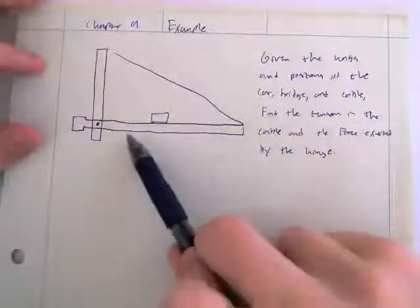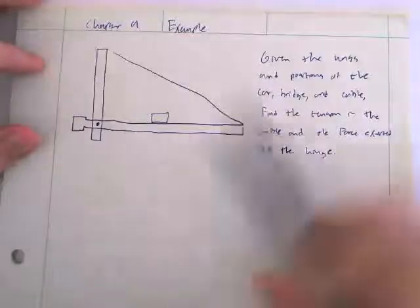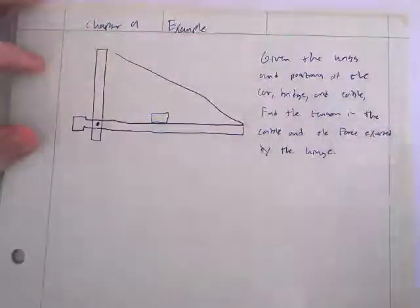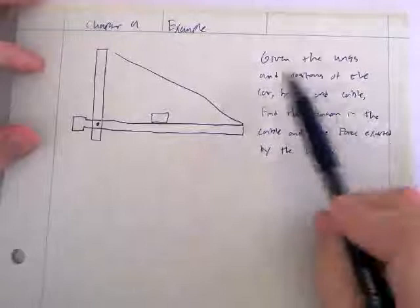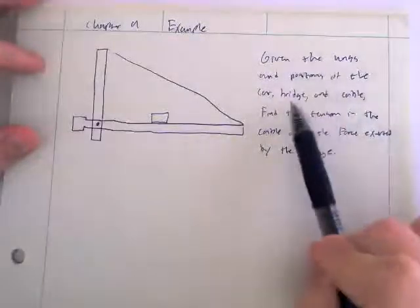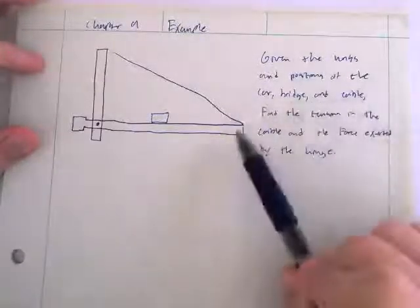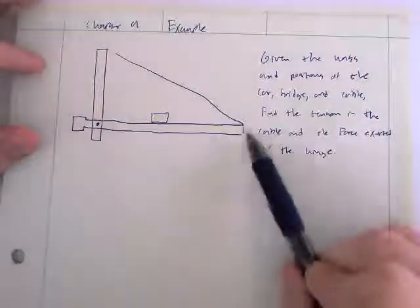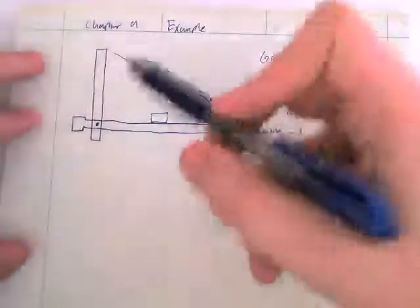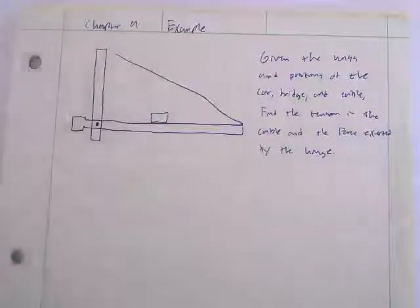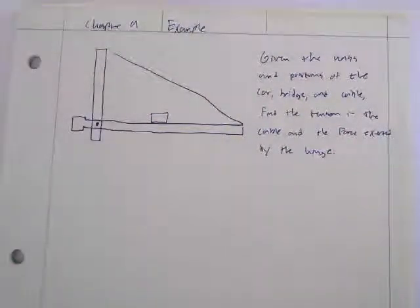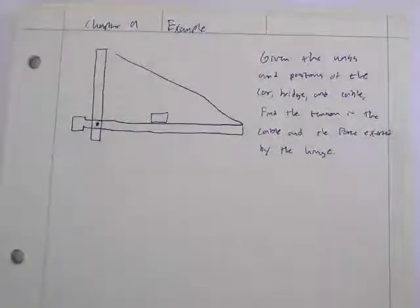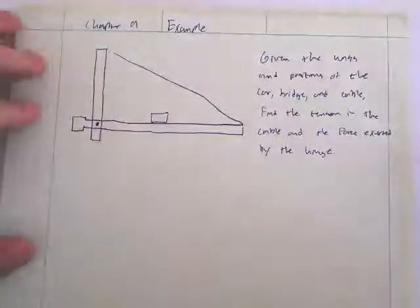So what we have is this problem here. We have a car driving across a drawbridge. We're given the mass and the positions of the car, the mass of the bridge, and the position of where the cable is attached to this bridge. What we're going to do is find the tension in the cable and the force of this hinge. Before we put any numbers to this, let's draw all of our forces onto this diagram, then figure out which ones apply torques, which will allow us to set up our equations and solve for our variables.